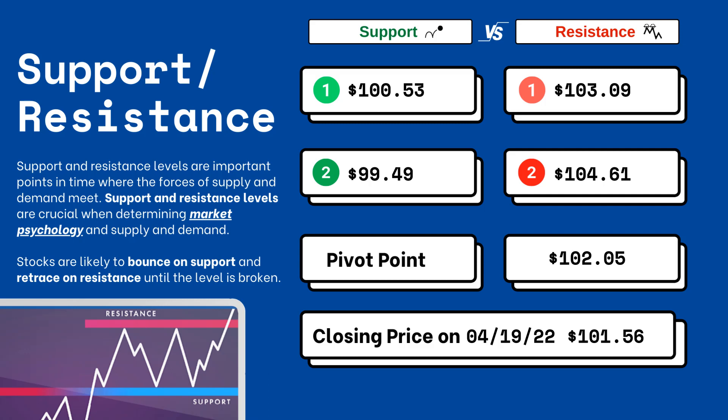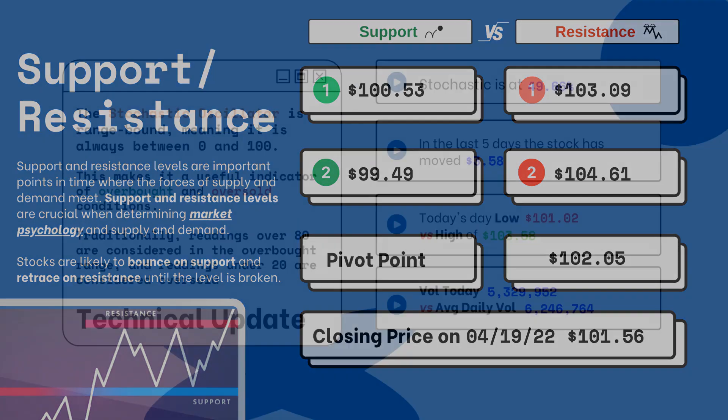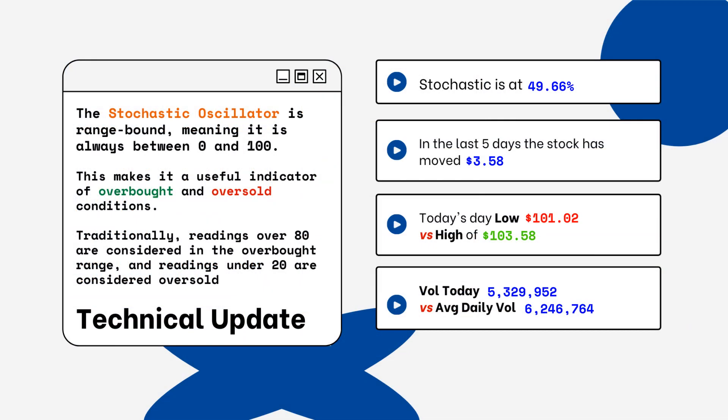These are areas that you want to watch when you're looking at this particular stock. Stocks typically bounce at support levels and they resist at resistance levels, meaning they'll retrace from that top level. You can also see on the right side where the stochastic level is on this particular stock — this is a technical update so you want to look for overbought and oversold conditions.